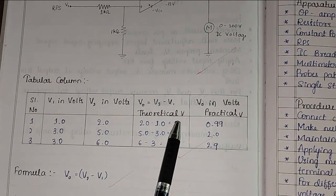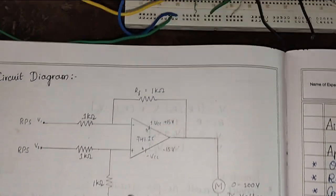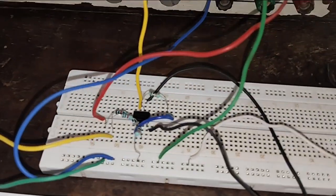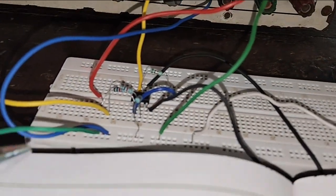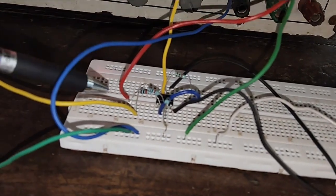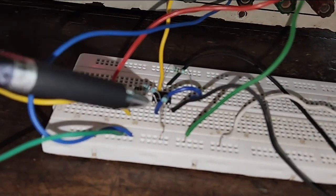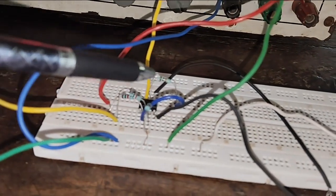Now we will construct this circuit on breadboard. On the breadboard we can see that it consists of op-amp IC. One resistor is connected at pin number 2, two resistors are connected at pin number 3, and this is a feedback resistor.